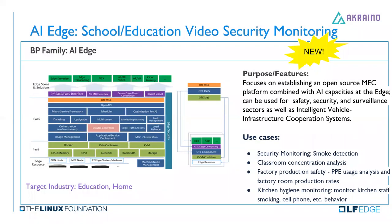The AI Edge blueprint establishes a MEC platform combined with AI capability at the edge. The green card uses Docker, Kata, and KVM as part of the AI-as-a-Service. It's also open source by ByteDance — the edge OTE IaaS. The platform layer provides open APIs to connect with the OTE web portal. Use cases include smoke detection, classroom concentration analysis, factory production safety, personal equipment usage analysis, and kitchen hygiene monitoring. It's deployed in several tier-one cities in China.